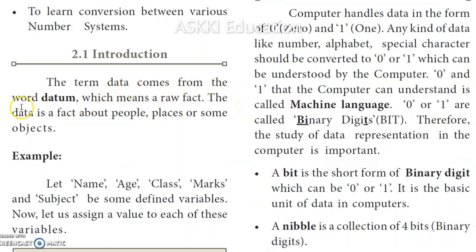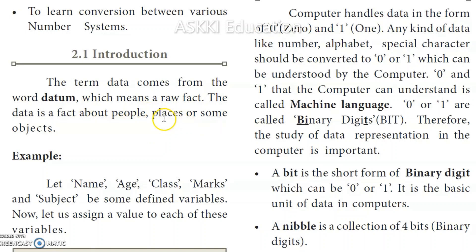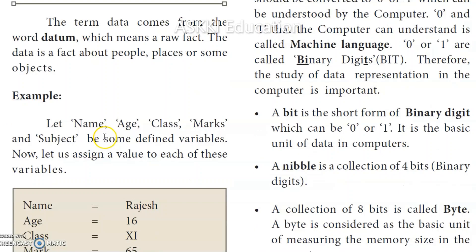The term 'data' comes from the word 'datum', which means a raw fact. Data is a fact about people, places, or some objects. When we collect a fact about people or objects, that is our data.